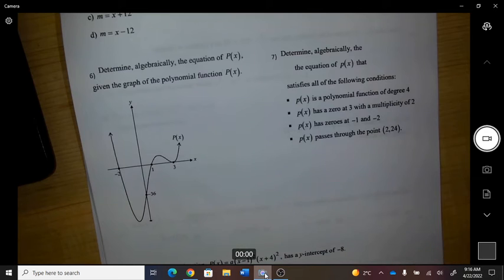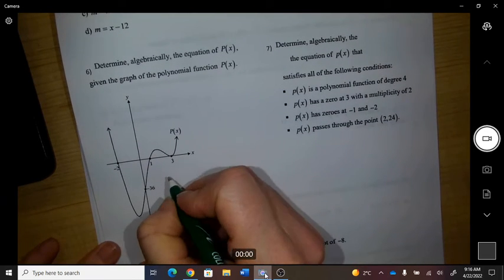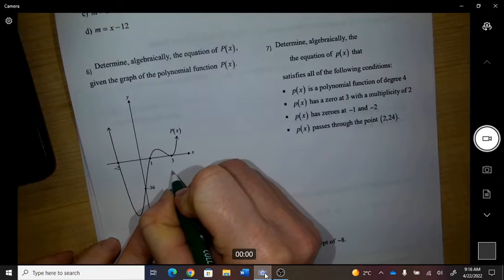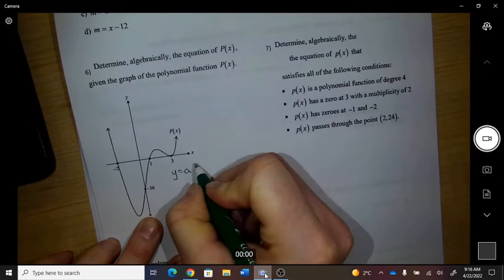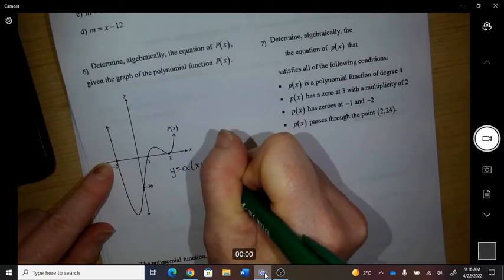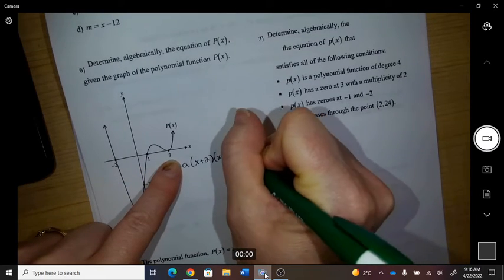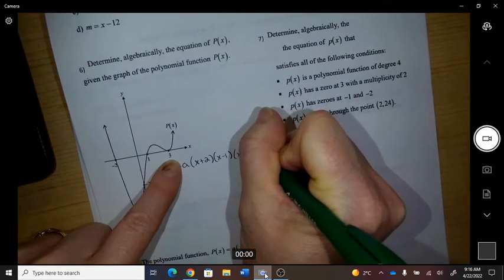Determine the equation, question 6. So this is a fourth degree positive slope, so some kind of coefficient. I have a factor x plus 2, I have a factor with x minus 1, and x minus 3 with a bounce.